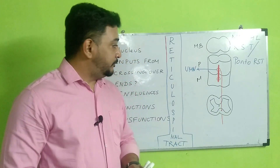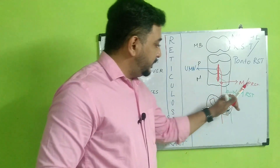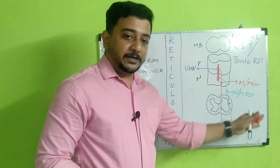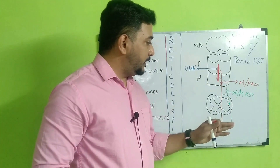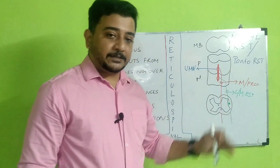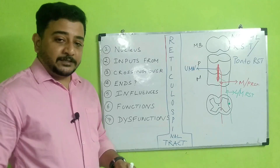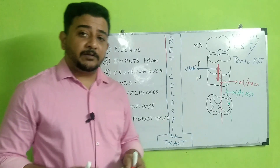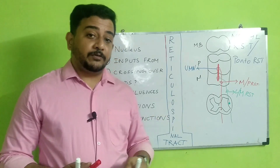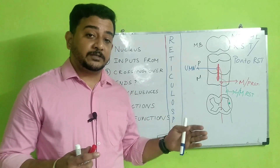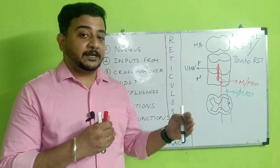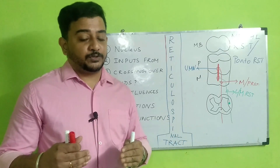The green one is the lateral or medullary reticulospinal tract, and the red one is the medial or pontoreticulospinal tract. These two tracts differ not only from a descending or anatomical positional point of view, but also from a functional point of view — they differ in two different extremes. That is how the reticulospinal tract acts on locomotion of the human body.